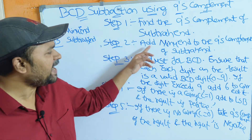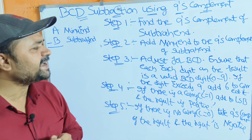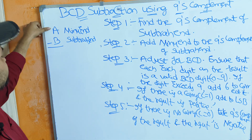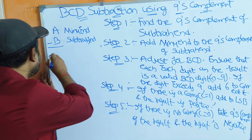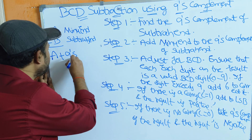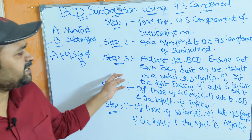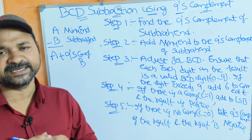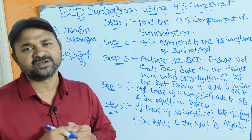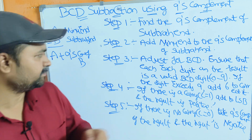Step 2: add the minuend to the 9's complement of the subtrahend. So here the minuend means A, so we have to add A to the 9's complement of the second number. Step 3: adjust for BCD. After performing the addition operation we have to check whether the digits are in BCD notation or not.